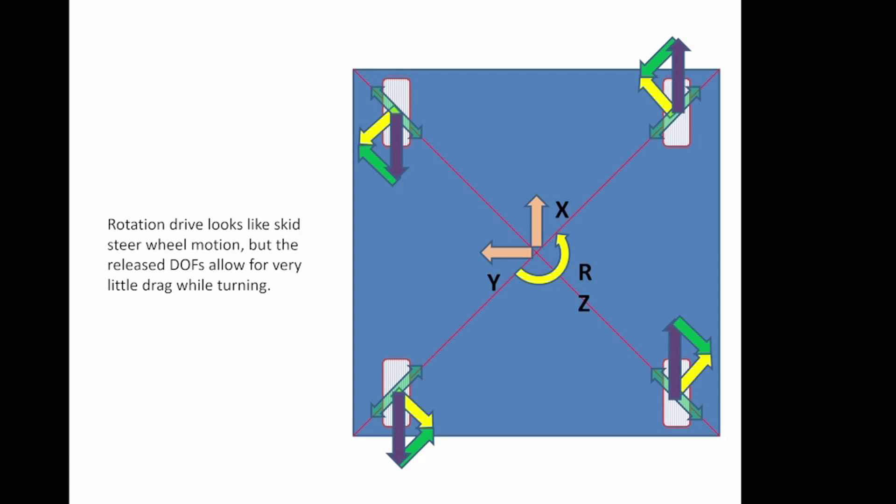The actual physical motion of rotation looks like the four-wheel drive skid steering in that one side is driven forward, the other side is driven back. The difference is that instead of sliding, the release degrees of freedom allow those embedded wheels to roll and you get the motion that you need for pure rotation without having drag on the ground. So, the mecanum wheel turning is more efficient than the four-wheel drive skid steer.